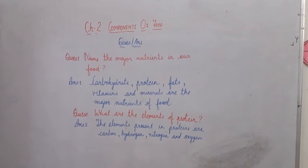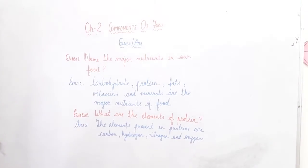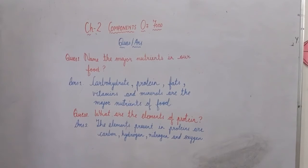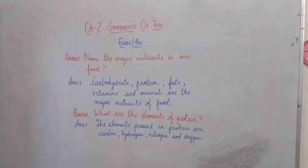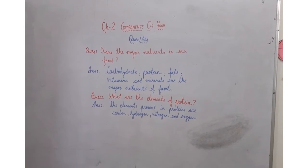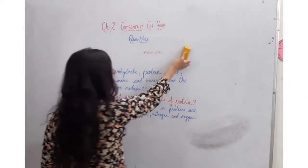So the protein is present. What are the elements of protein? The elements are carbon, hydrogen, nitrogen, oxygen.